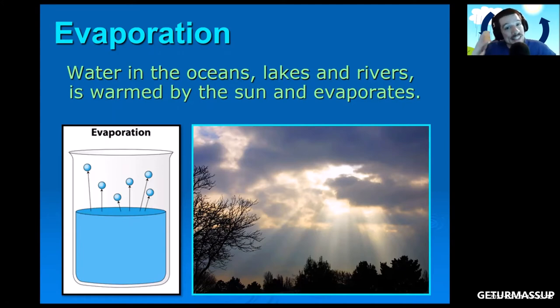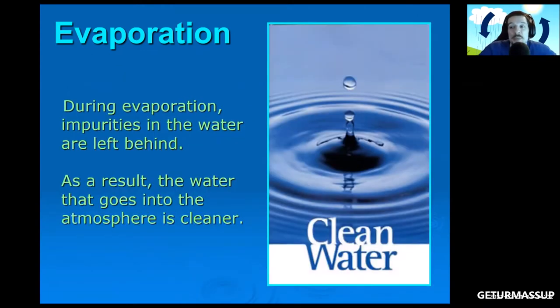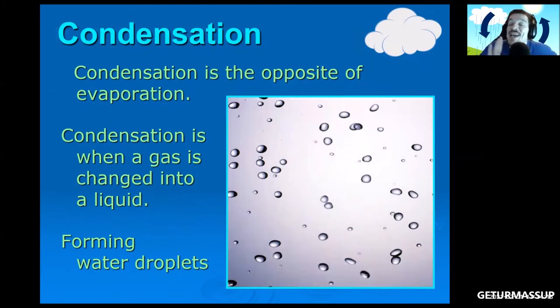If you look into the sky and you say "oh look, a cloud," you're actually looking at condensation, you're not looking at evaporation. So evaporation is a process you can't see, but you can see that it's happening. Just go outside, leave a glass of water, come back in a couple hours - I bet you that water has lowered, that's evaporation. During evaporation, impurities in the water are left behind. As a result, the water that goes up into the atmosphere is cleaner than when it was down on the earth.